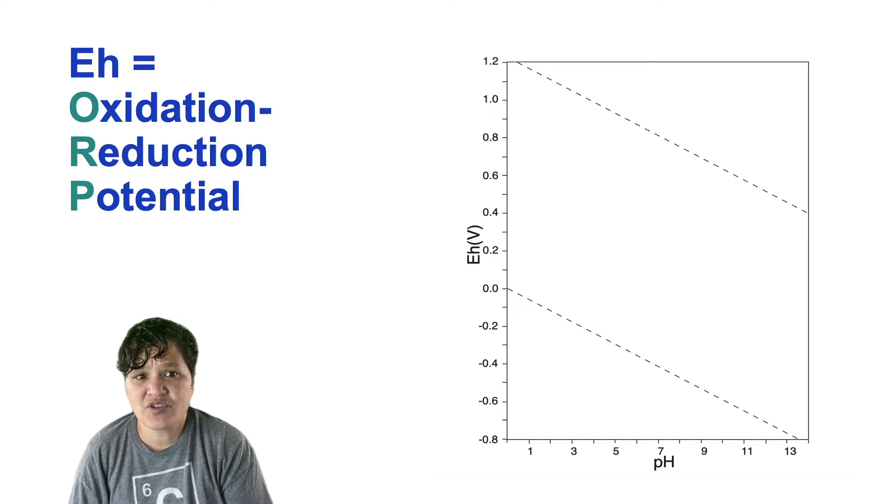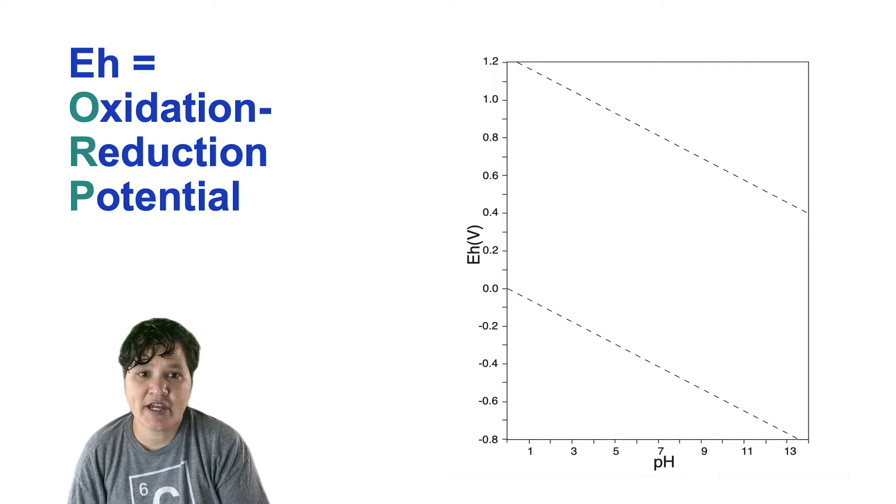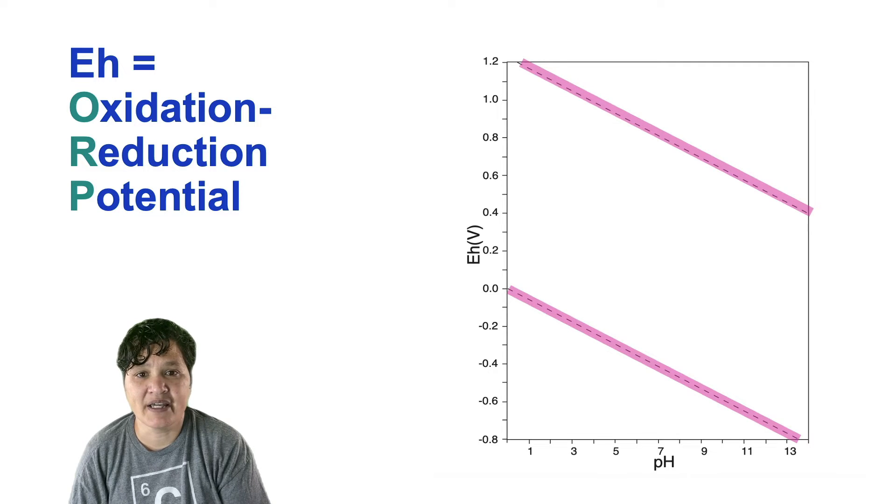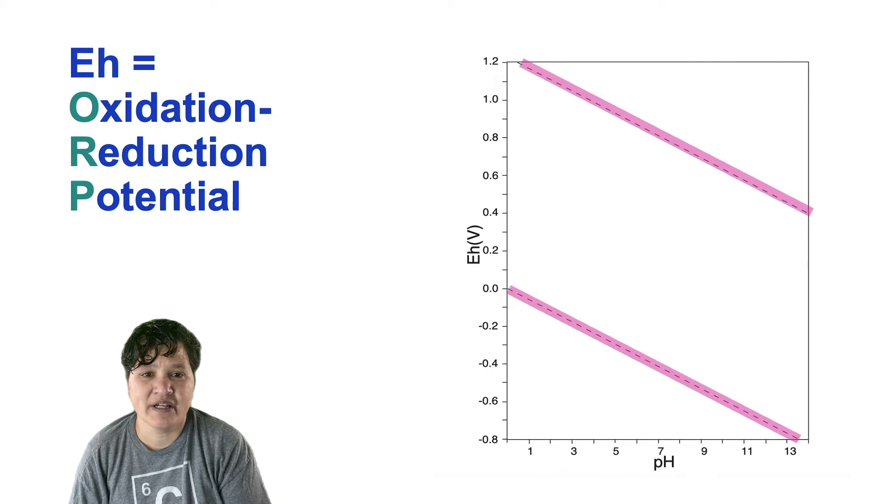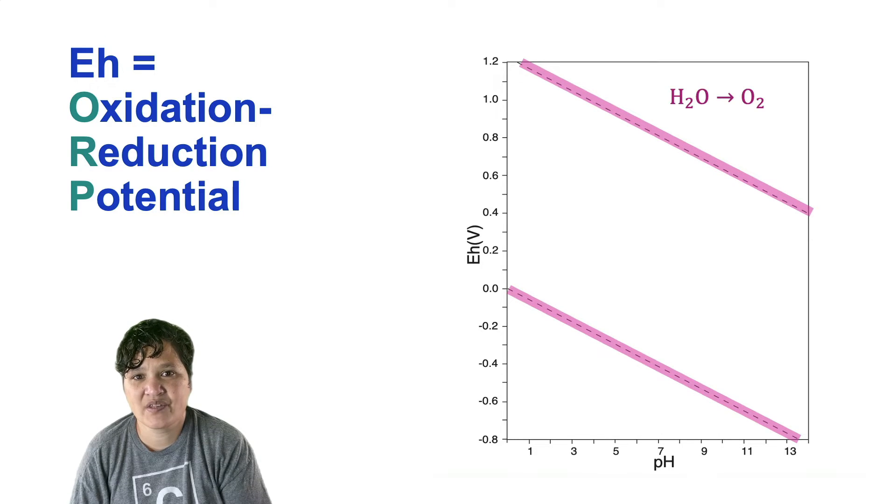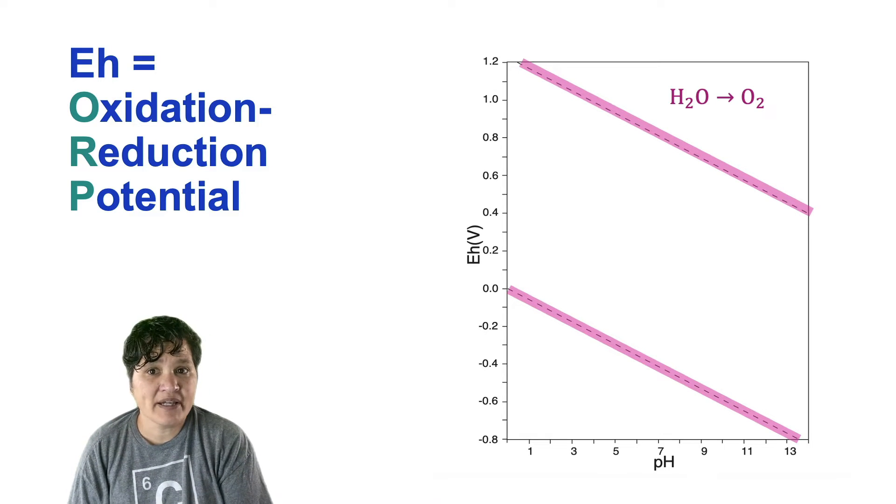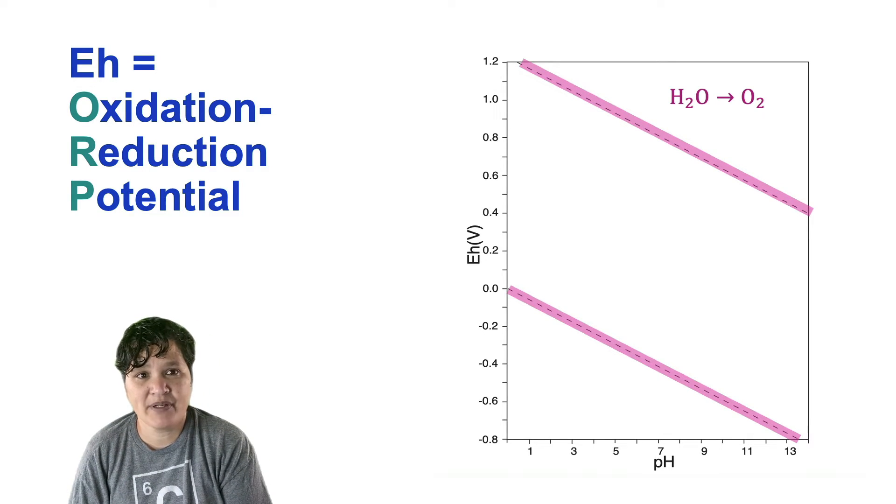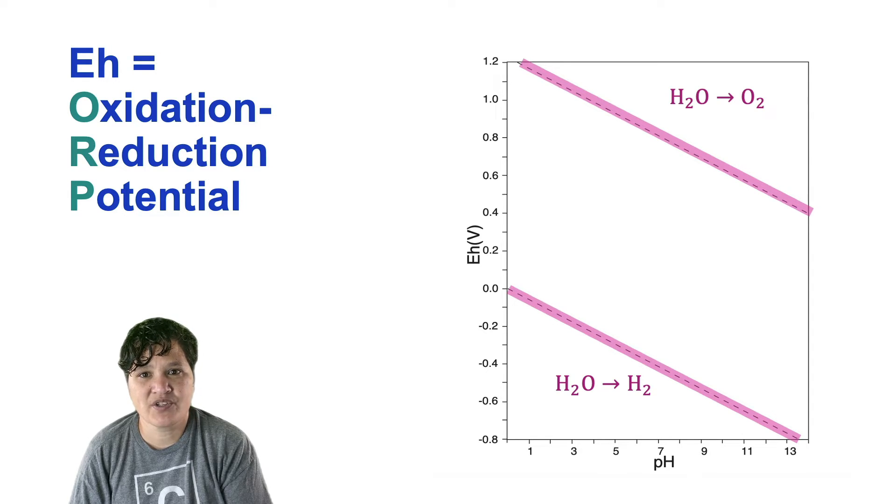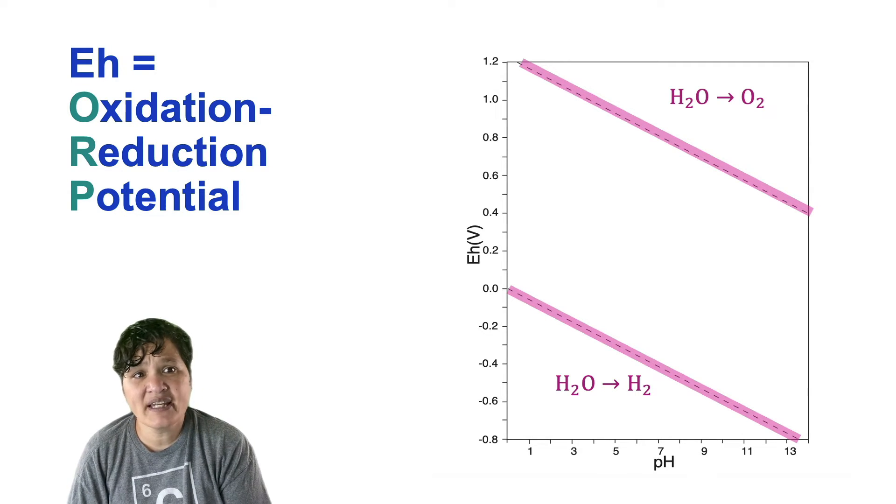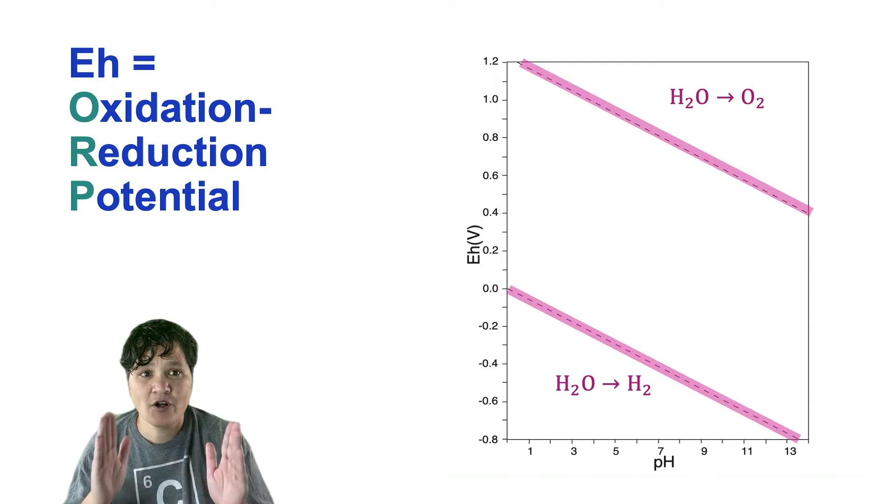Now one thing that you saw in the EH-PH diagram for sulfur that you will see in every other EH-PH diagram is this set of parallel lines. These represent the limits on what you can find in aqueous solution. What does that mean? Well, this top line here represents what happens under extremely oxidizing conditions. The water will actually turn into oxygen gas and you won't have an aqueous solution anymore. Likewise, this lower line represents what will happen under extremely reducing conditions where the water gets reduced to hydrogen gas. So everything in aqueous solution must fall between those two lines.